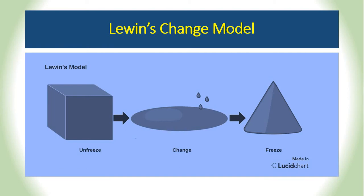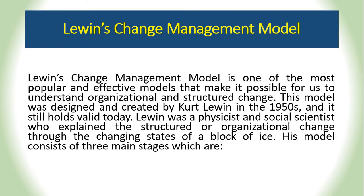In a planned change, the company wants to move from the present situation to a desired situation in the future. The organization is in a situation where their performances or operations need improvement, so they set goals and objectives they want to achieve. For example, an organization may want to penetrate a new market to grow the business and increase market share — so they need to change their strategies, improve their performances, and improve their operations. This model can be compared to a block of ice.